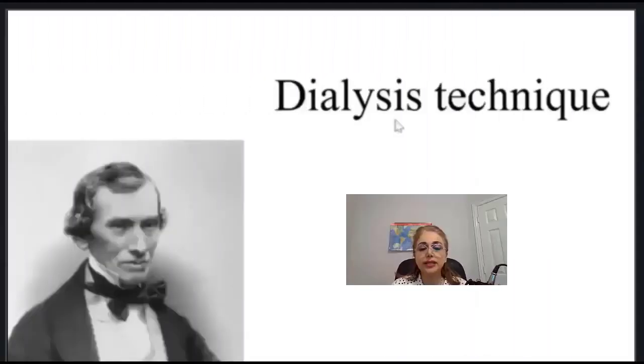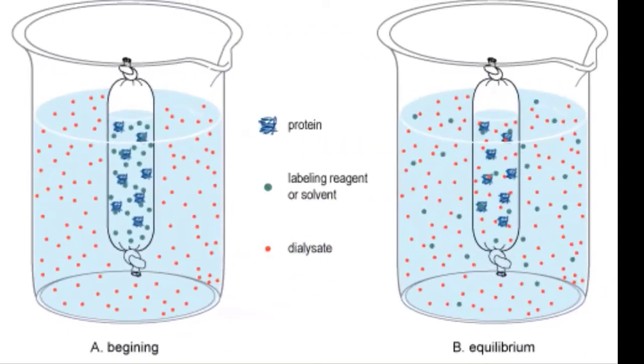The dialysis technique was introduced by Thomas Graham in 1861 and scientists use an artificial cell that is called dialysis tubing for many purposes such as purifying substances like drugs.